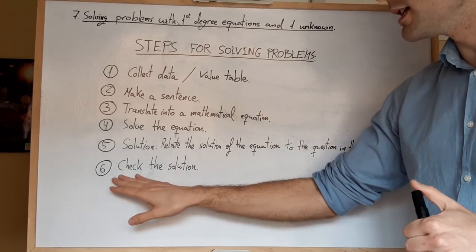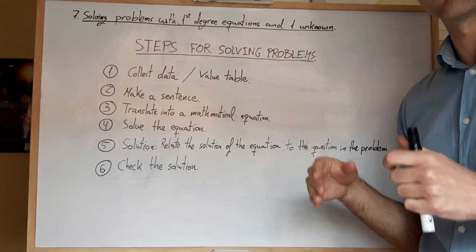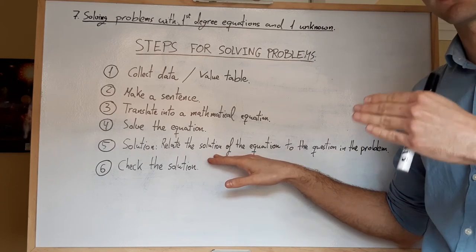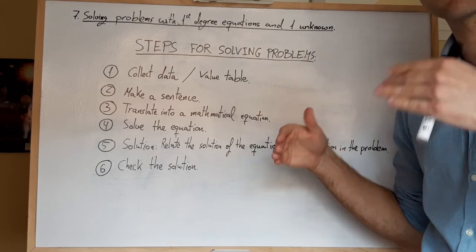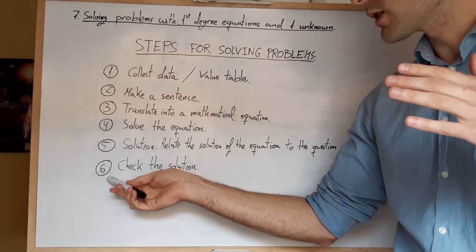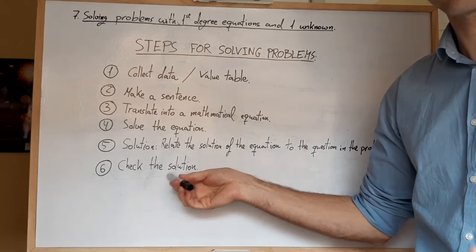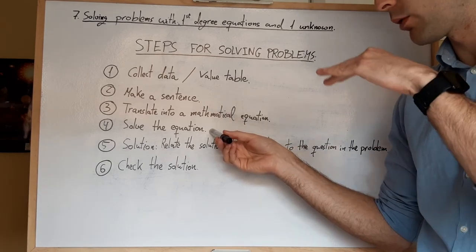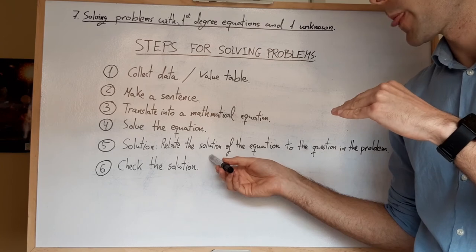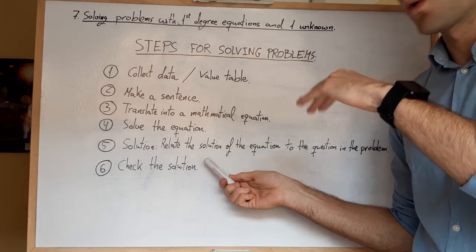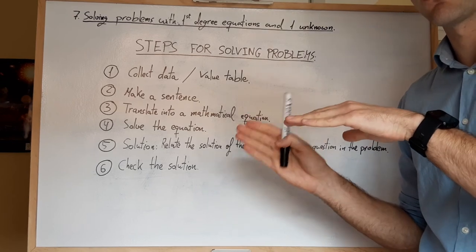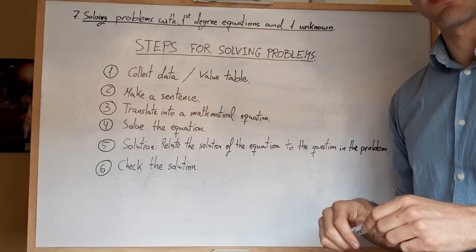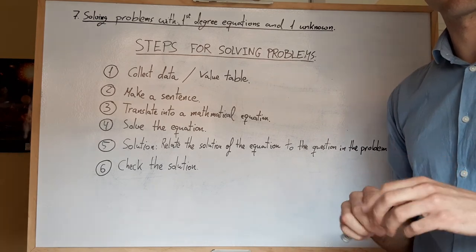Y por último, en el sexto paso lo que hacemos es la comprobación. Comprobamos que la solución de los pasos 4 y 5, primero, que la solución de la ecuación tiene sentido, y segundo, perdón, y quinto, perdón, sí, en segundo lugar, que es el quinto paso, que la relación entre la solución de la ecuación y los datos del problema tiene sentido y concuerda bien con el contexto del problema. Y ya con eso, pues terminamos de resolverlo, ¿vale?